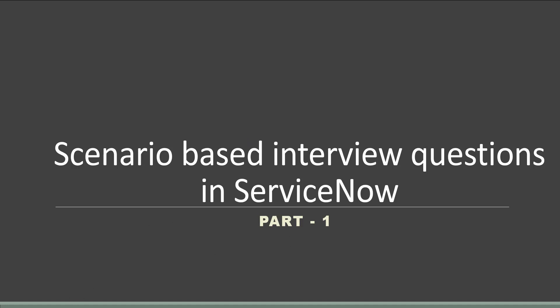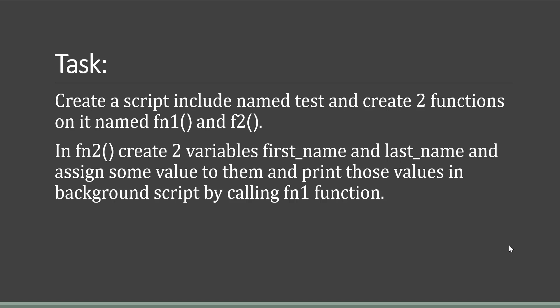The first task in this series: create a Script Include named 'test' and create two functions on it named fn1 and fn2. In fn2, create two variables — first_name and last_name — and assign some values to them. Then print those values in the background script by calling the fn1 function.